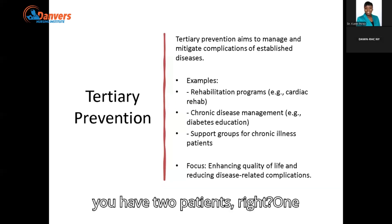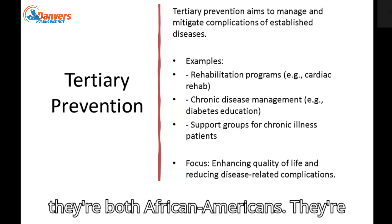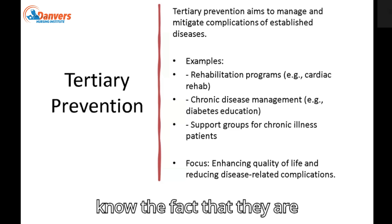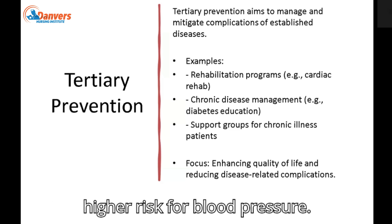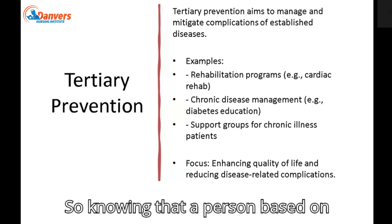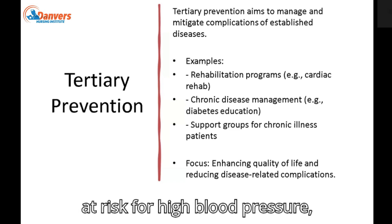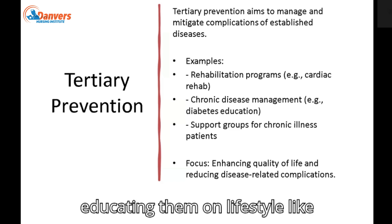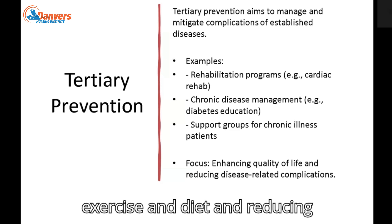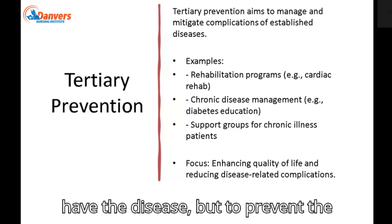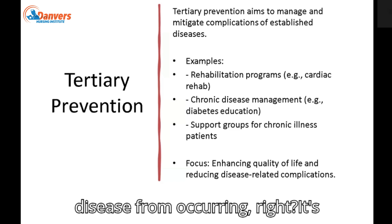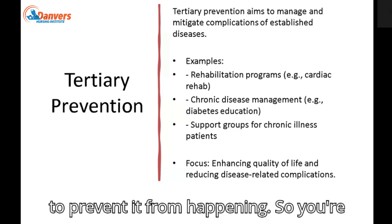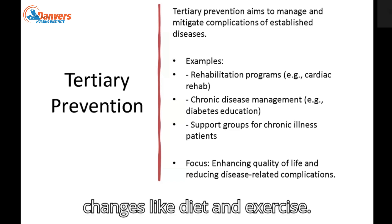Let me give you an example with two patients — both African American males. We know that African American males are at higher risk for high blood pressure. So for male number one, knowing that a person based on genetics and race is at risk for high blood pressure, for primary prevention you're going to educate them on lifestyle changes like exercise, diet, and reducing fatty intake — not because they have the disease, but to prevent it from occurring. It's still education, but they don't have the disease.